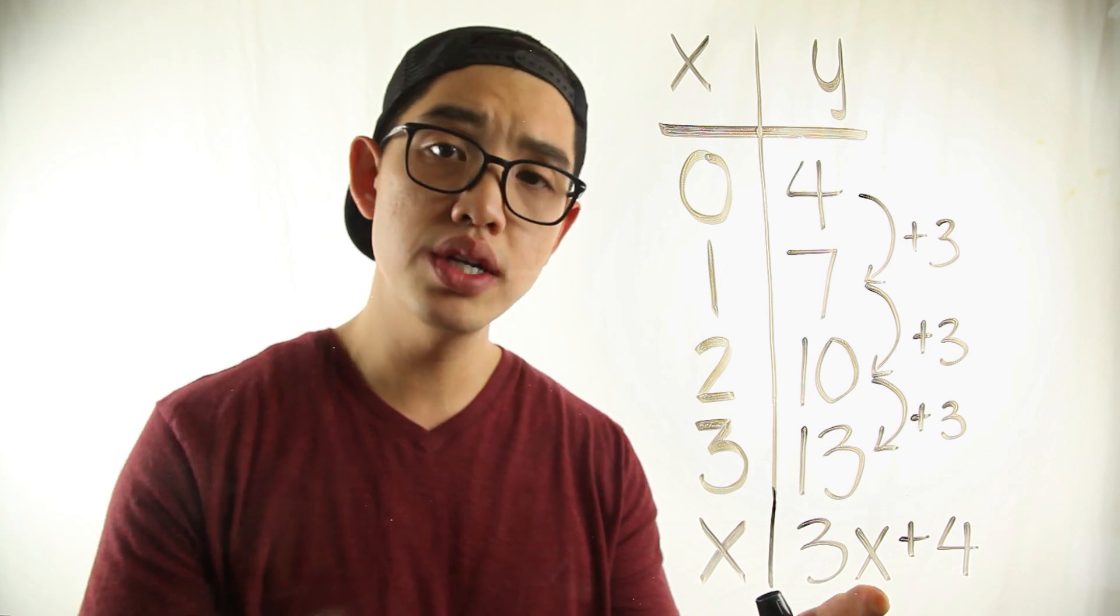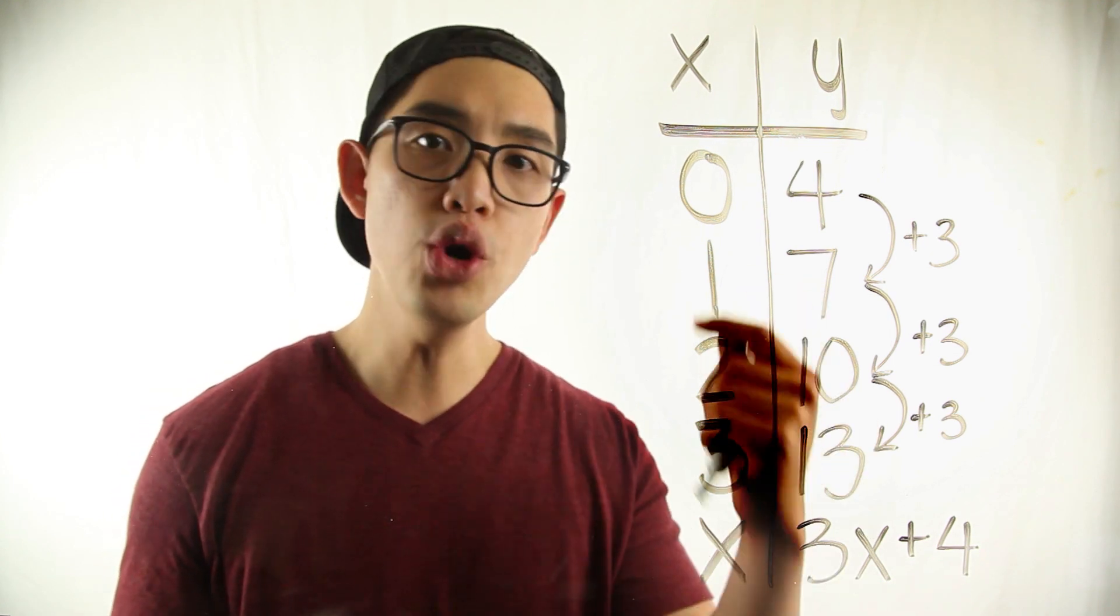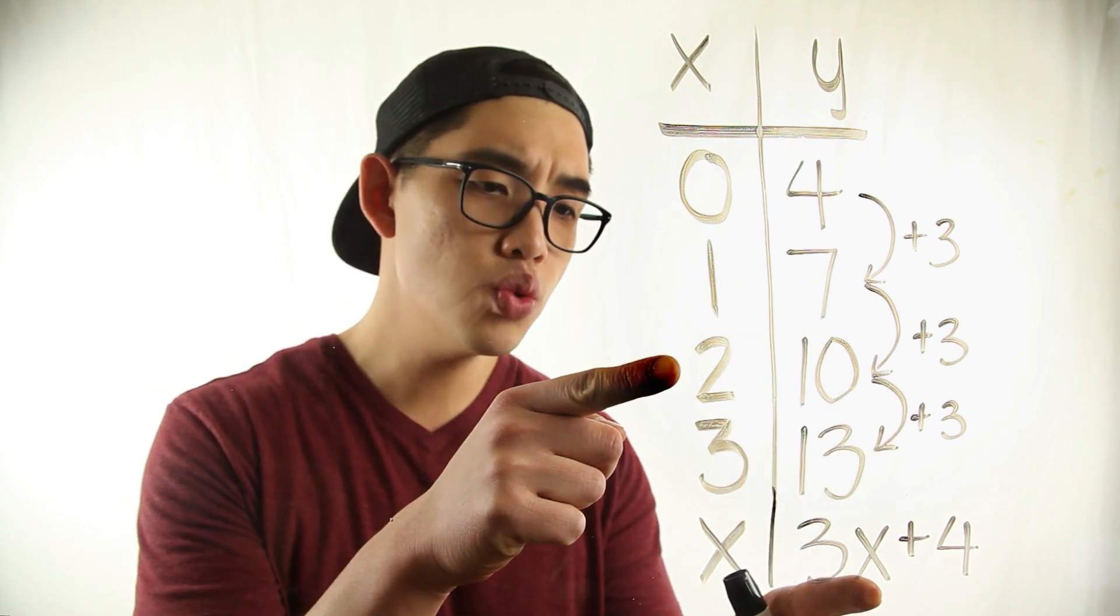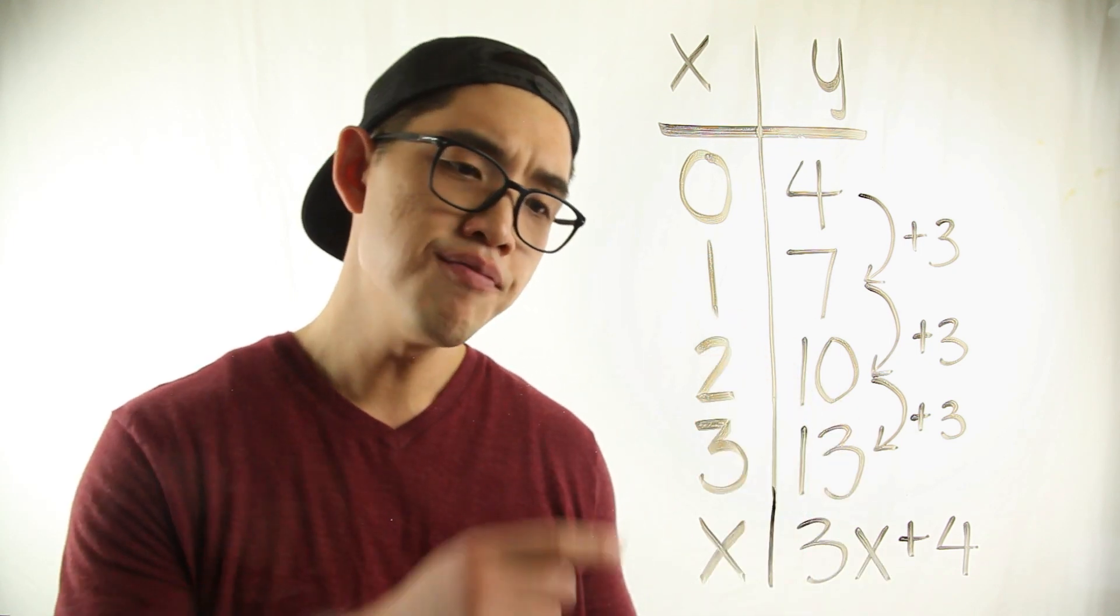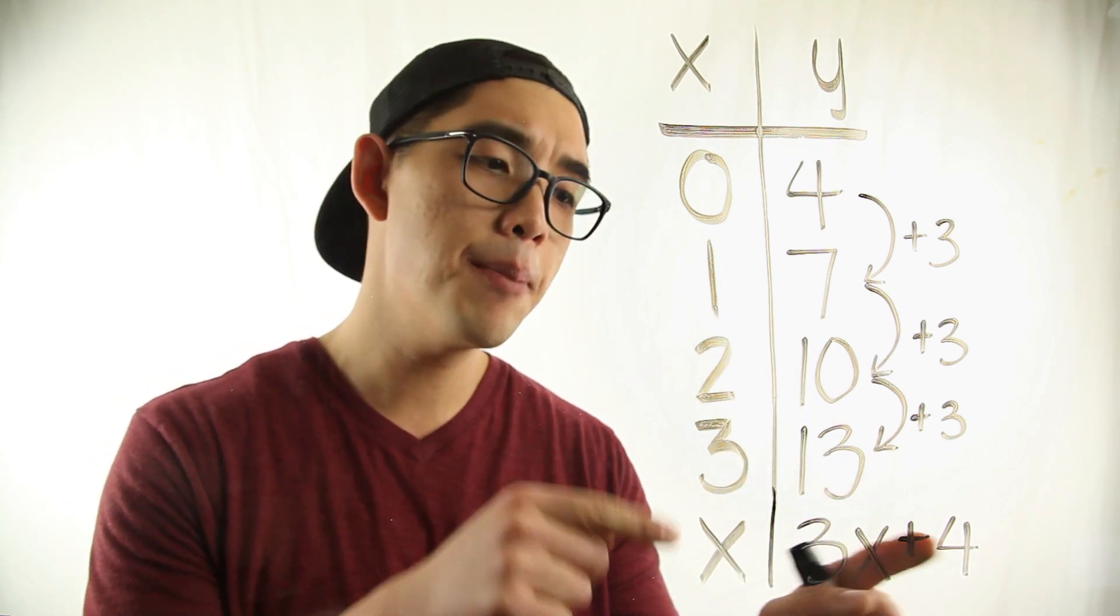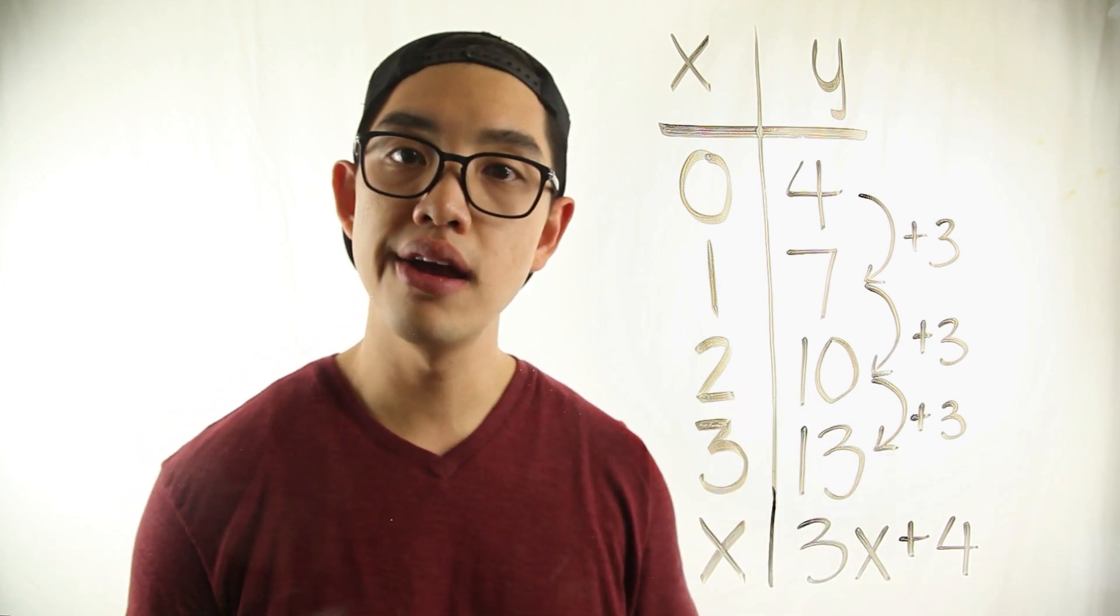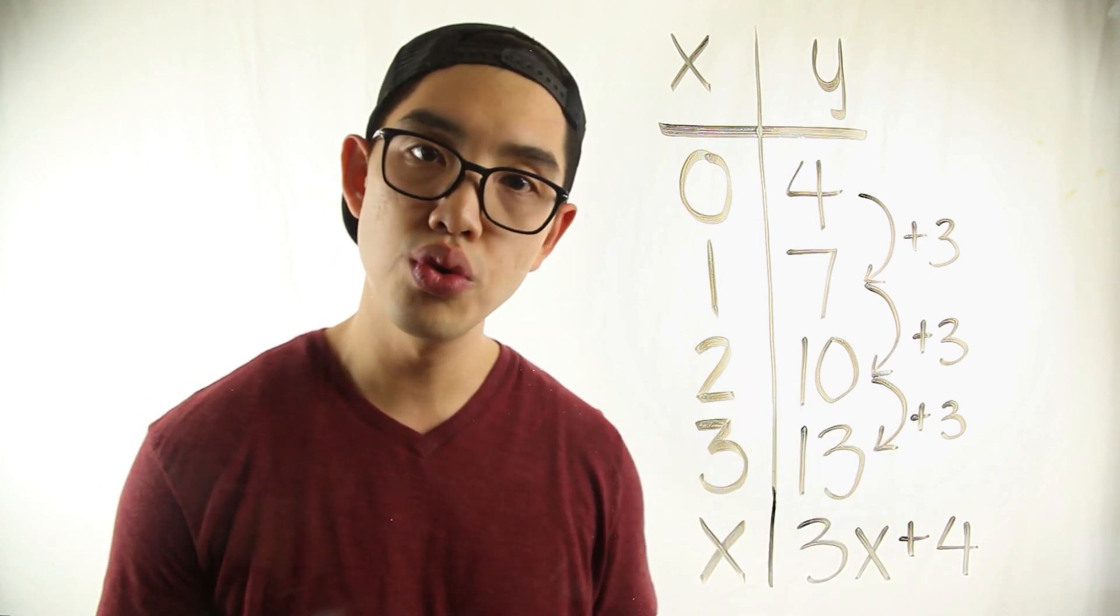If I plug in one, three times one is three, plus another four. You get seven. If you plug in two right here, three times two, that's six. Six plus four, that's ten. Three times three is nine, nine plus four, thirteen. Hey you know what? Our function rule works.